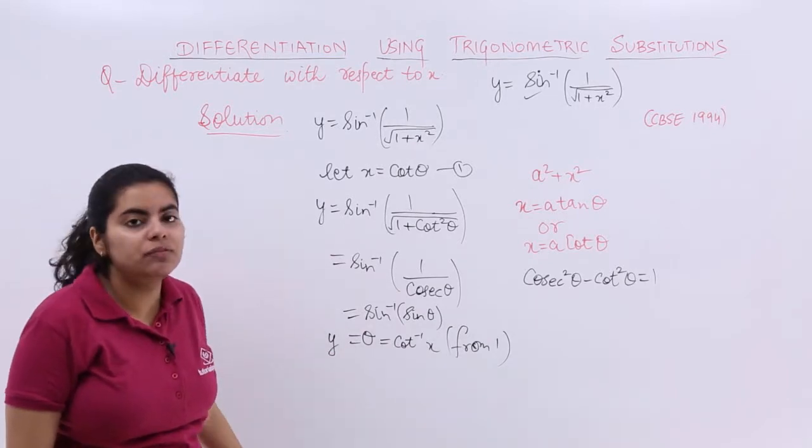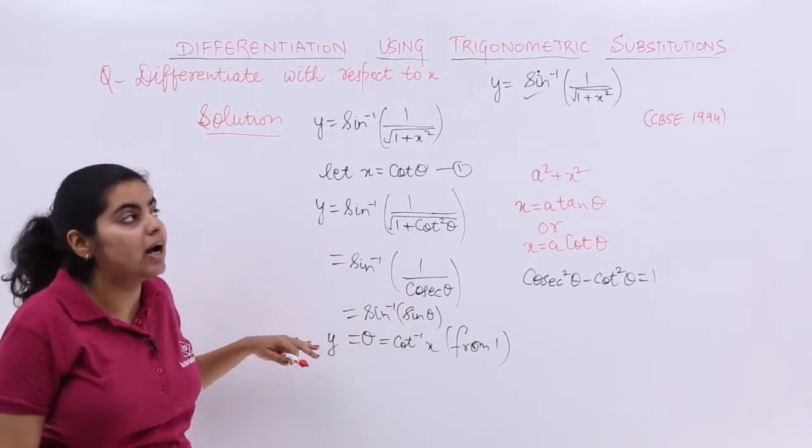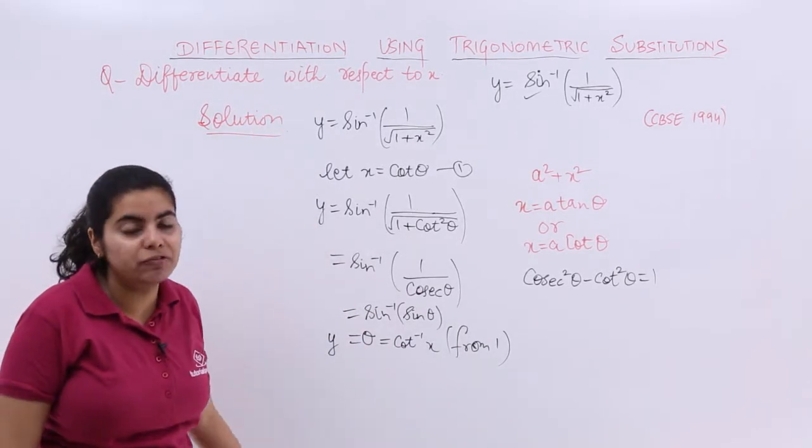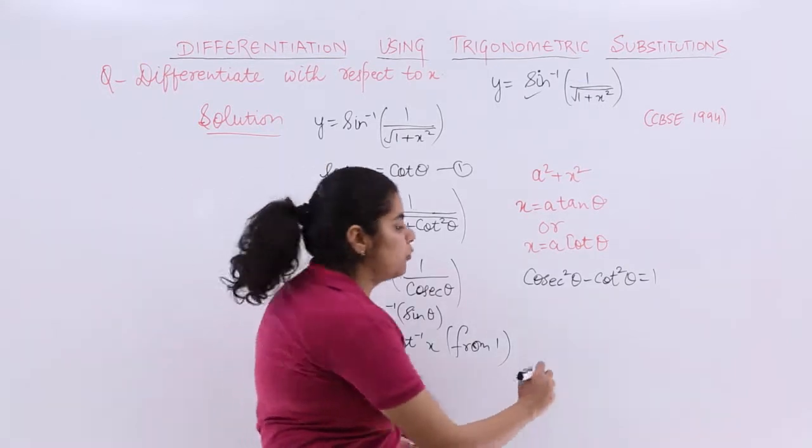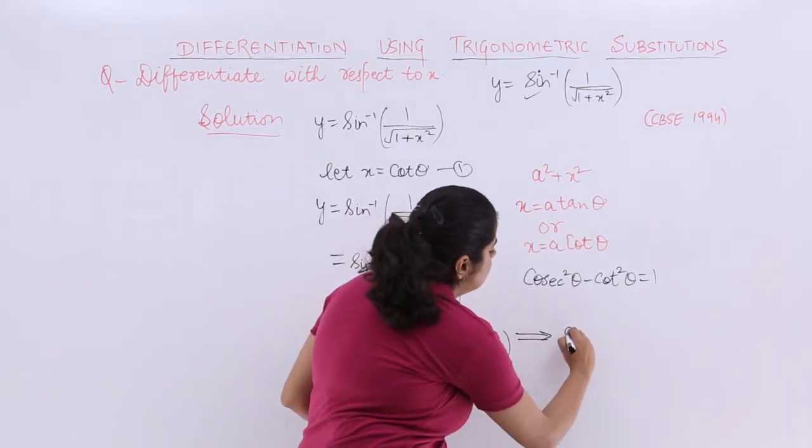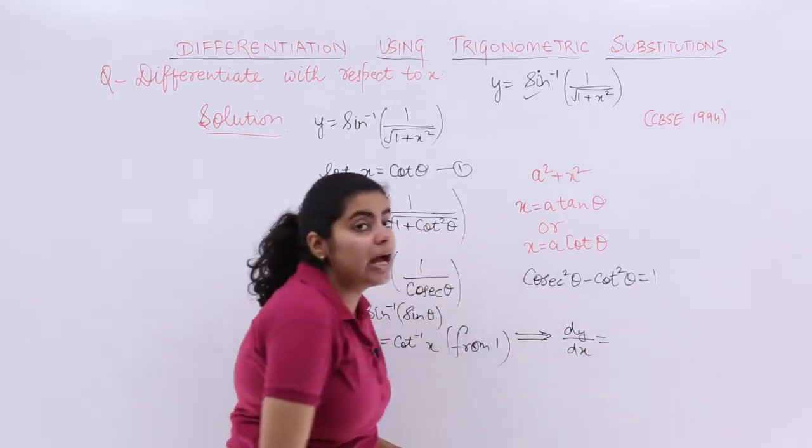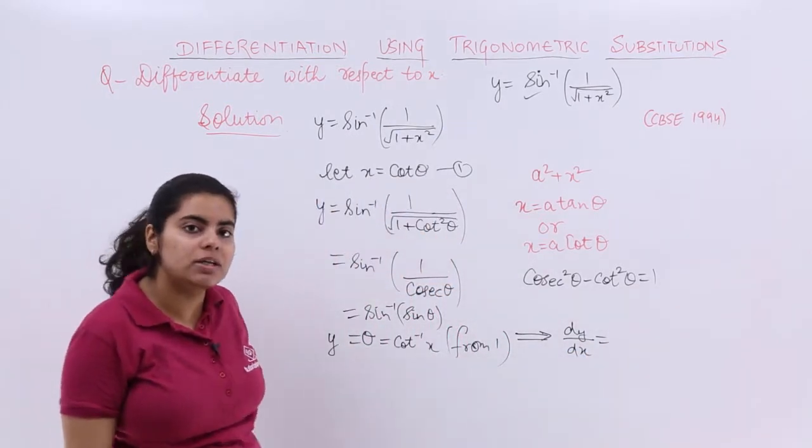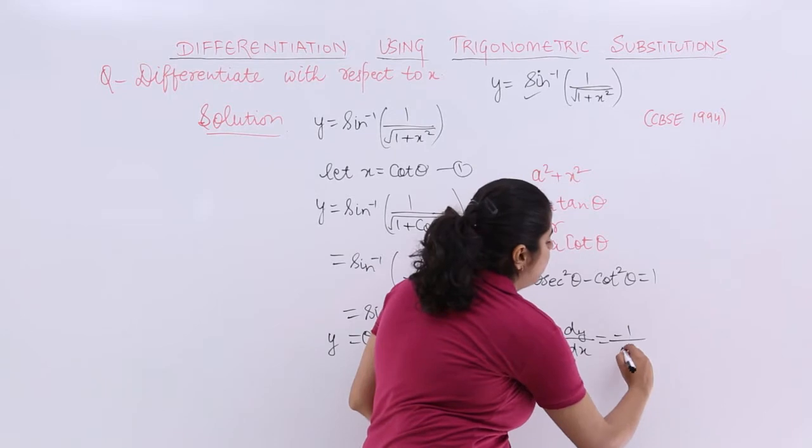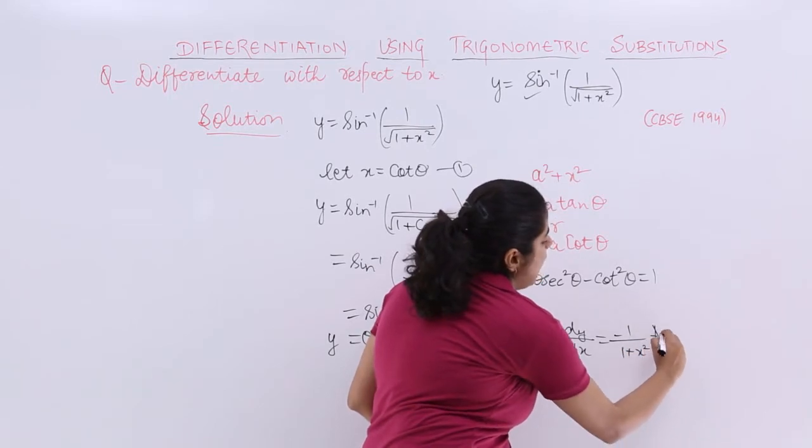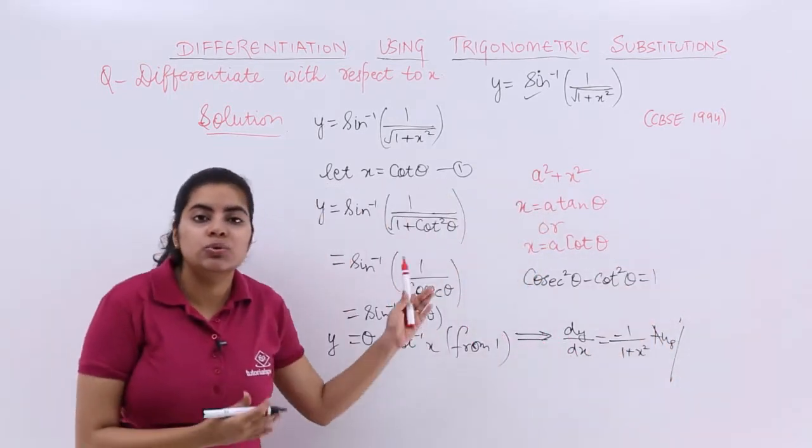When θ = cot⁻¹(x) and θ = y, my task was to find differentiation, so the answer is dy/dx. The differentiation of cot⁻¹(x) is -1/(1+x²), and that is the answer to this question.